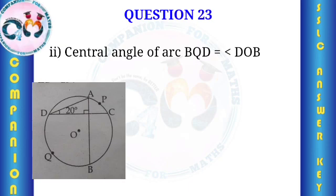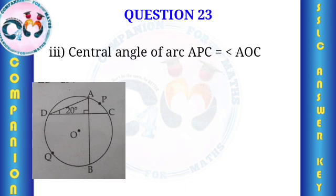If we consider chord DB, the inscribed angle DAB is already 70 degrees. So the central angle of arc BQD is 70 degrees — the inscribed angle equals the central angle relationship. The central angle of arc APC corresponds to chord AC, and the central angle is 20 × 2 = 40 degrees.